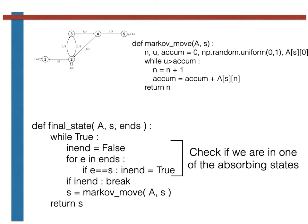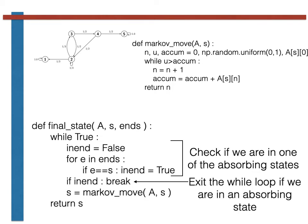This first part of the code checks if we are in one of the absorbing states that are listed in the array called ends. If the code finds that we are in one of these states, we then break out of the while loop and return from the function.